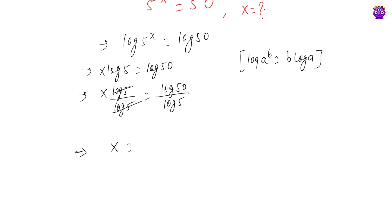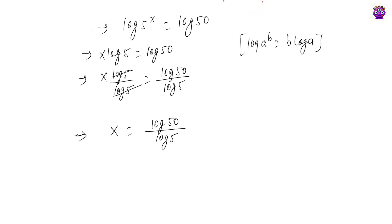Now we can simplify further for log 50 and log 5. So log 50 can be written as log 10 times 5 over log 5. And we also know that log a times b equals log a plus log b.